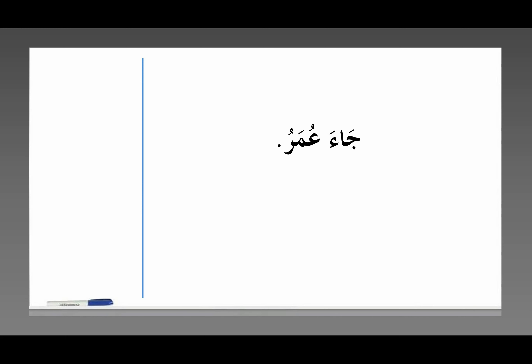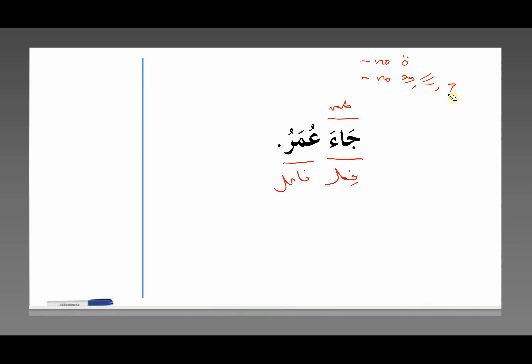Jaa' Umar — a very simple sentence. This is the fi'l, the verb. We know that because it's a very common verb, but also because there's no ta marbuta, no tanween, no aleph lam. It has no signs of a noun, it's certainly not a particle — it has to be a verb. And this is a noun.